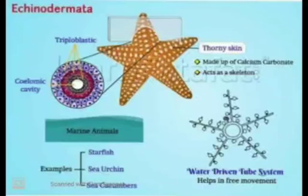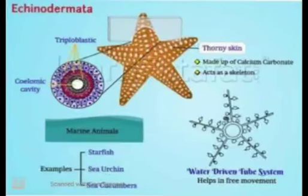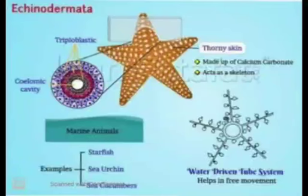Next is phylum Echinodermata. Echino means spines or hedgehog, and derma means skin. That is why they are called Echinodermata — because they have spiny skin. They are triploblastic with a coelomic cavity. They have a hard skeleton made up of calcium carbonate. They have a water-driven tube system used for locomotion, and they are exclusively free-living marine animals.